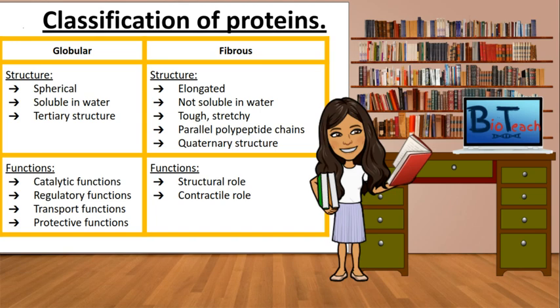Fibrous proteins have an elongated structure and are not water soluble. They provide stiffness and rigidity to cells and tissues and have an important structural or contractile role. Things like collagen fall into this particular category.